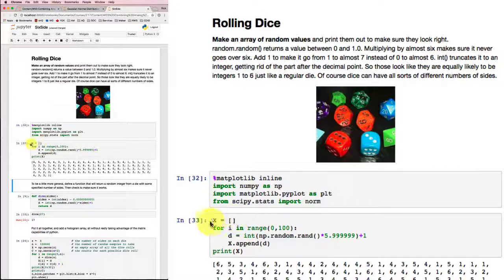I've got an array of x here, and I'm going to go 0 to 100. So I'm going to do this 100 times and try to get a dice roll as the integer value of a random number. Now, nprandom.rand returns a value between 0 and 1. So if I multiply it by a number a little bit smaller than 6, I'll get a number that is running between 0 and not quite 6.